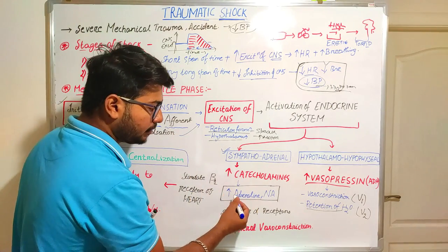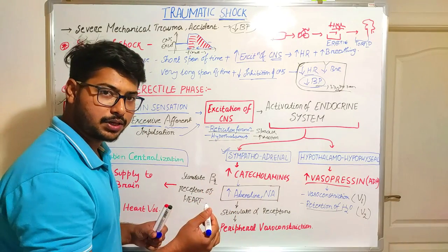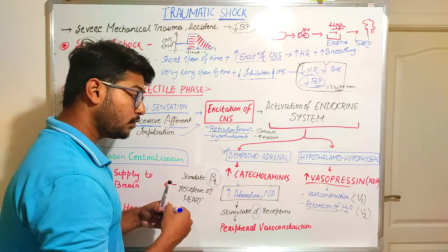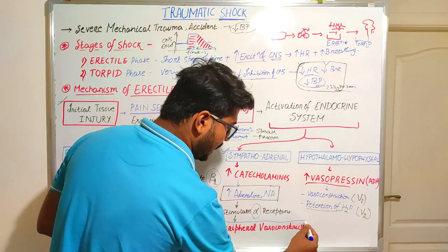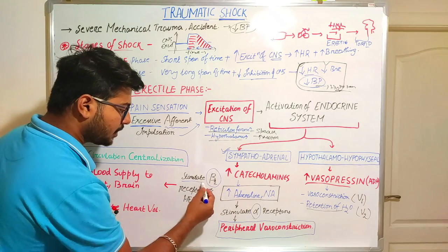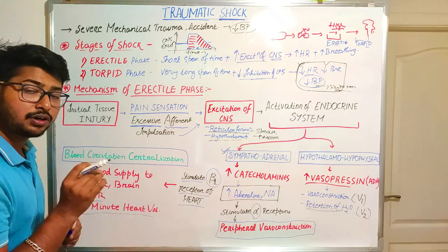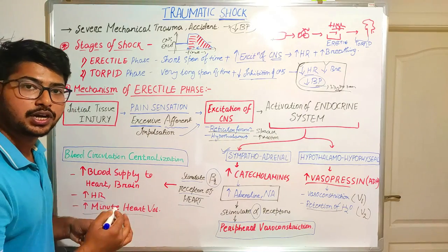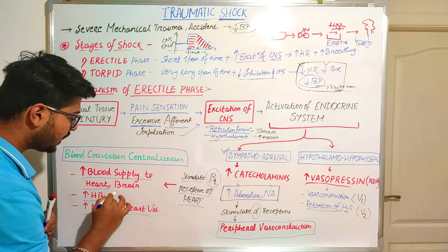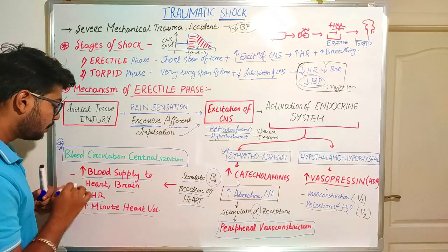In the sympatho-adrenal system, there is increasing catecholamines from the adrenal medulla — adrenaline and noradrenaline — which stimulate adrenoreceptors in the body. Beta-adrenoreceptors in the heart and alpha-adrenoreceptors in peripheral blood vessels are stimulated. This results in peripheral vasoconstriction and stimulation of beta-1 receptors in the heart, increasing heart rate and minute heart volume. Overall blood supply to vitally important organs like heart and brain is increased — this is called blood circulation centralization.